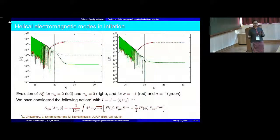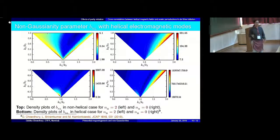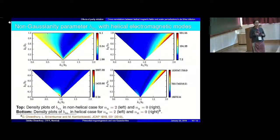We again evaluate the integrals and the three-point function shown before, and also evaluate the non-gaussianity parameter B and L and compare it with the non-helical case plotted on top versus the helical case. We see that again in the helical case, for both of the scenarios under consideration, the presence of the helicity part in the action introduces a very large amount of non-gaussianity in this three-point function, much larger compared to what we obtain in inflation, in both the non-helical cases where N_B equals 2 and the scale invariant case. So we can conclude that the presence of even a small amount of helicity can introduce a very large amount of non-gaussianity in this three-point function.